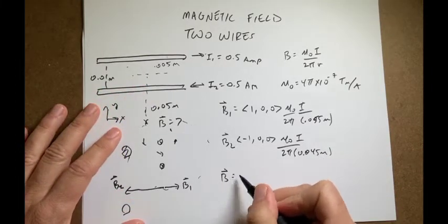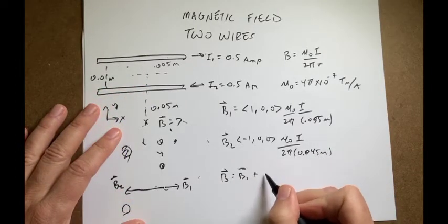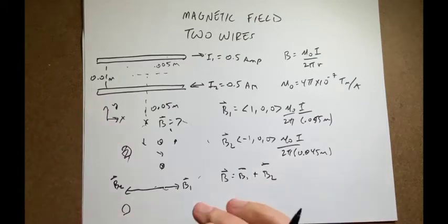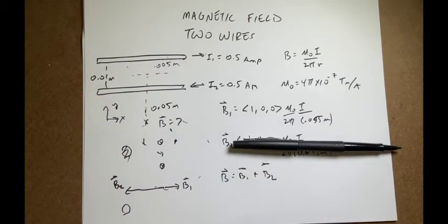So then the total magnetic field is going to be B1 plus B2. Okay, so let's just, I'm going to switch over here to Python. I'm going to try something new. Let's see if this works.